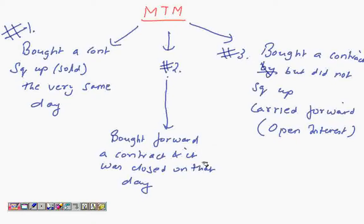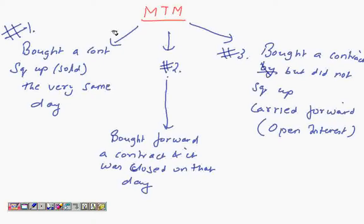A mark to market is required in all these three circumstances. One: you bought a contract and sold the very same day. Two: you bought a contract forward and it was closed on that day — a contract which you had purchased earlier and squared up on that day. Three: you bought a contract but did not square up — it is open interest and will be carried forward. In all three circumstances, you would require the mark to market. We'll look at the calculations from an example viewpoint.